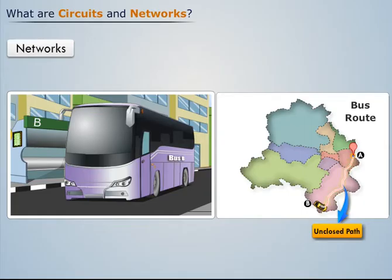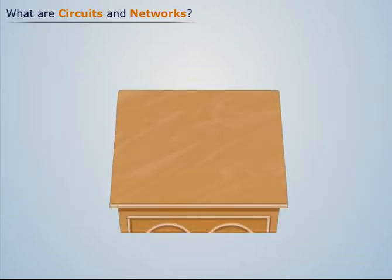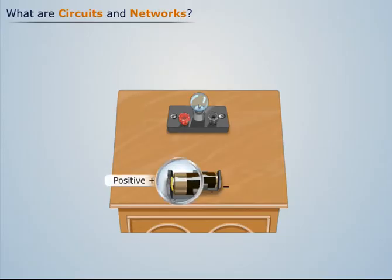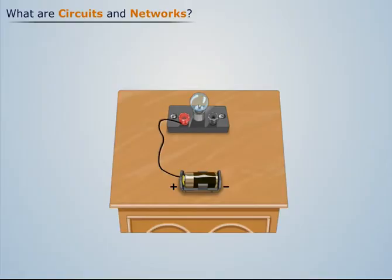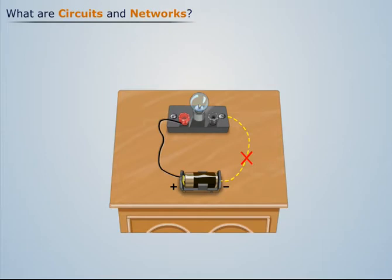Now let's consider a bulb and a battery. Let's connect the positive terminal of the battery to one end of the bulb, thus forming a system. The other end of the bulb and the negative terminal of the battery are disconnected, so we can say that this system has an open path.